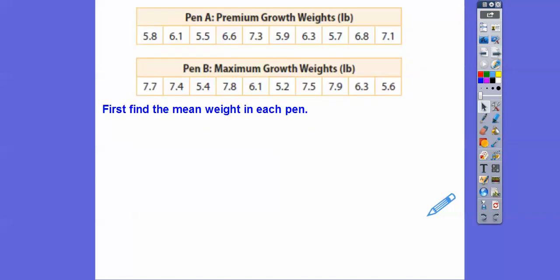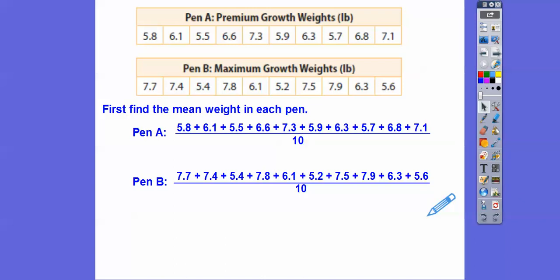Find the mean weight in each pen. Let's go ahead and do that. I'm going to add them up and divide by 10. Just to save some time, I'm sure you guys can do this. I'm just saving some time. So, all I did is I punched all of these in a calculator divided by 10, similarly with this one. It's closest to about 6.3 and 6.7. Those are the means of those weights, of those chickens in pen A and pen B.